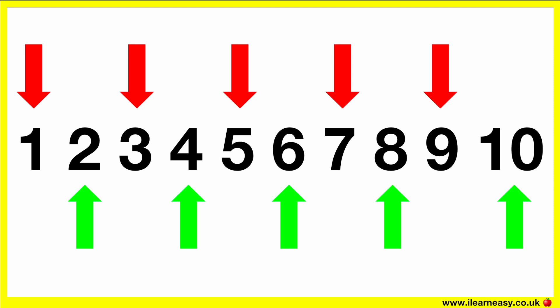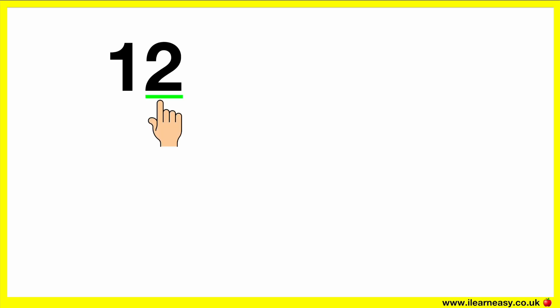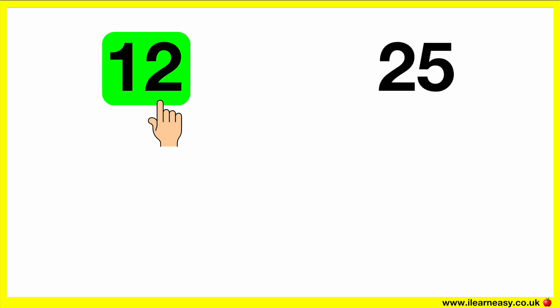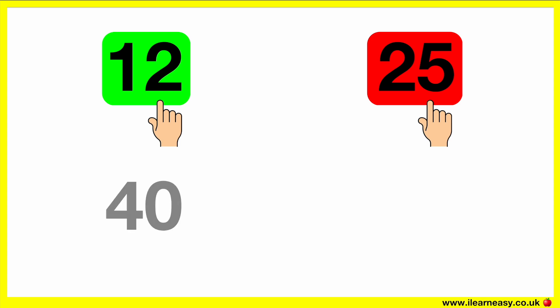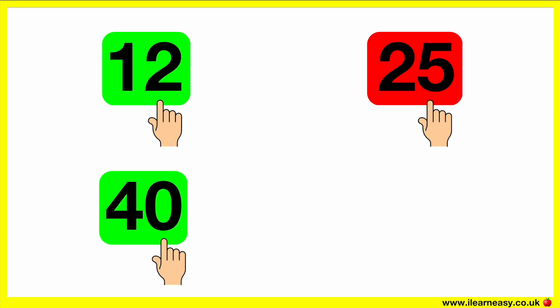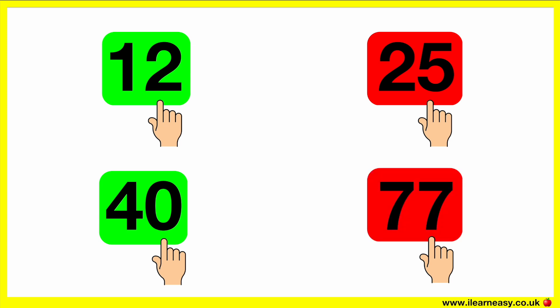Now let's look at some examples. The number 12 ends in the number 2, therefore it is an even number. The number 25 ends in the number 5, therefore it's an odd number. The number 27 ends in the number 7, therefore it's an odd number.